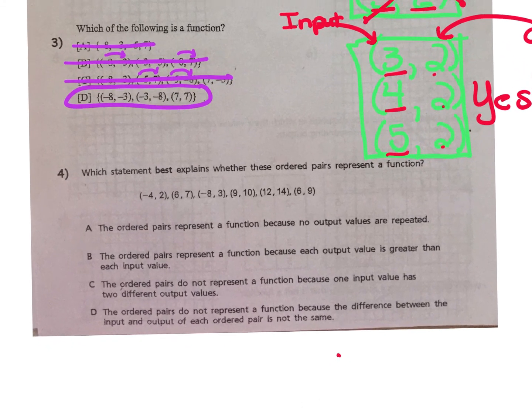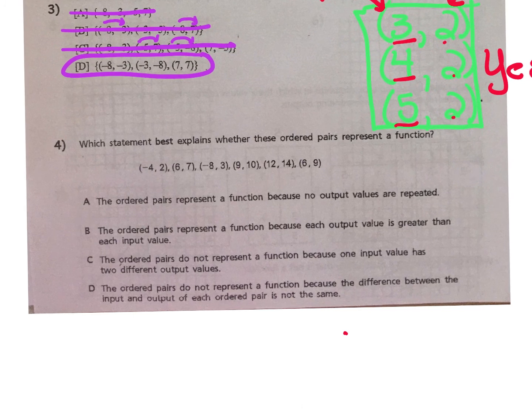Let's finish with number 4. Number 4 asks, which statement best explains whether these ordered pairs represent a function? As we scan the ordered pairs, we see that there's an issue. It's right here, with these ordered pairs. An input of 6 cannot have two different output values. So we know this is not a function.